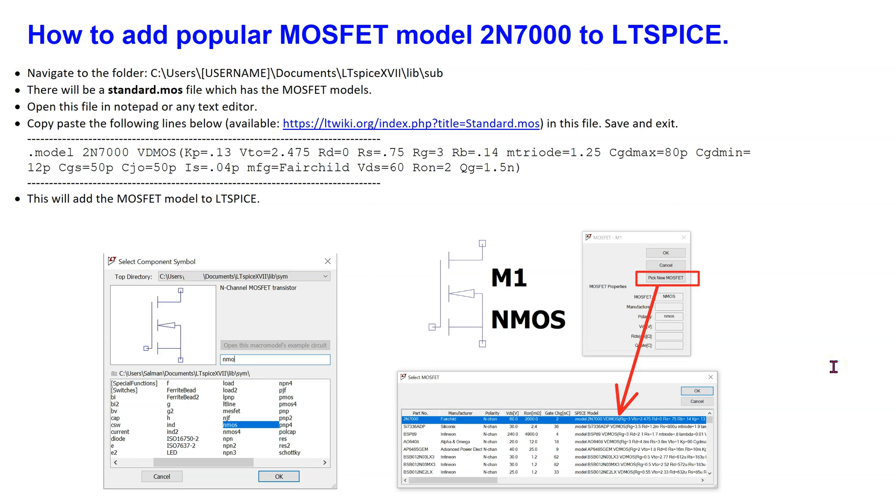The 2N7000 model is unfortunately not available in LTSPICE by default. However, it can be easily added by following the instructions shown here. This procedure of adding a MOSFET model to LTSPICE is very similar to adding a diode or BJT model to LTSPICE, which has been discussed in detail in other videos in this channel. The link to those videos is provided at the end of this video.